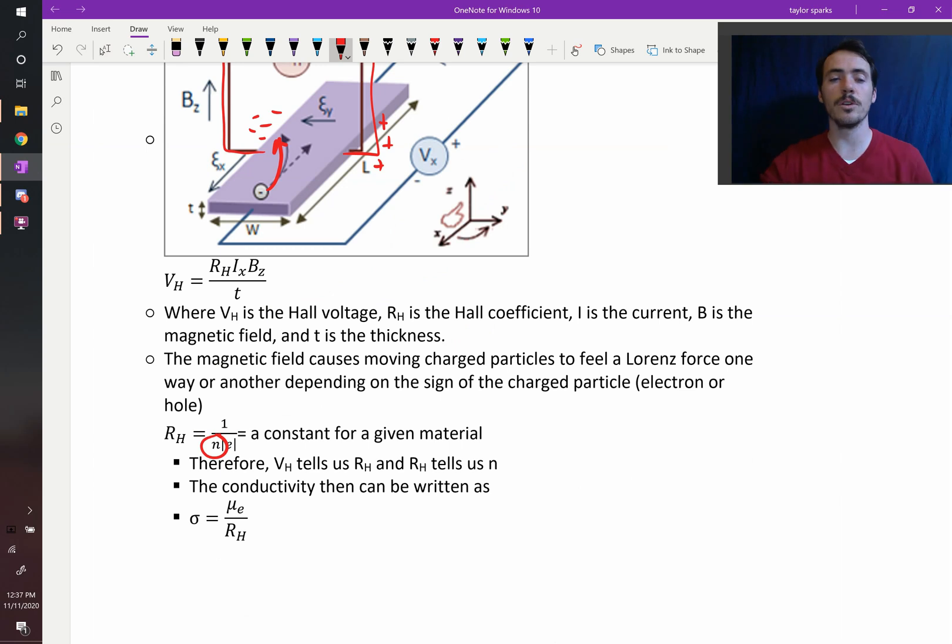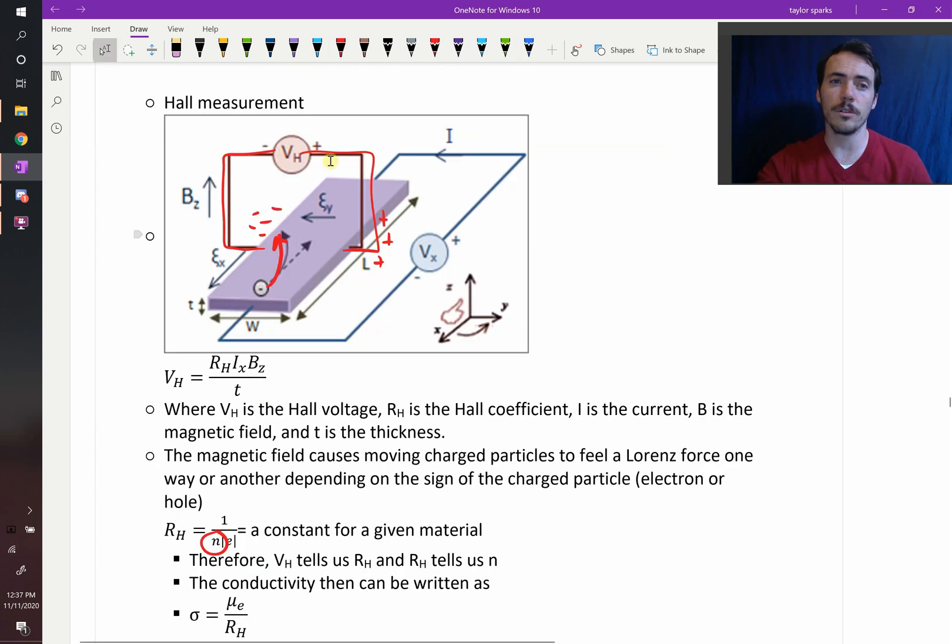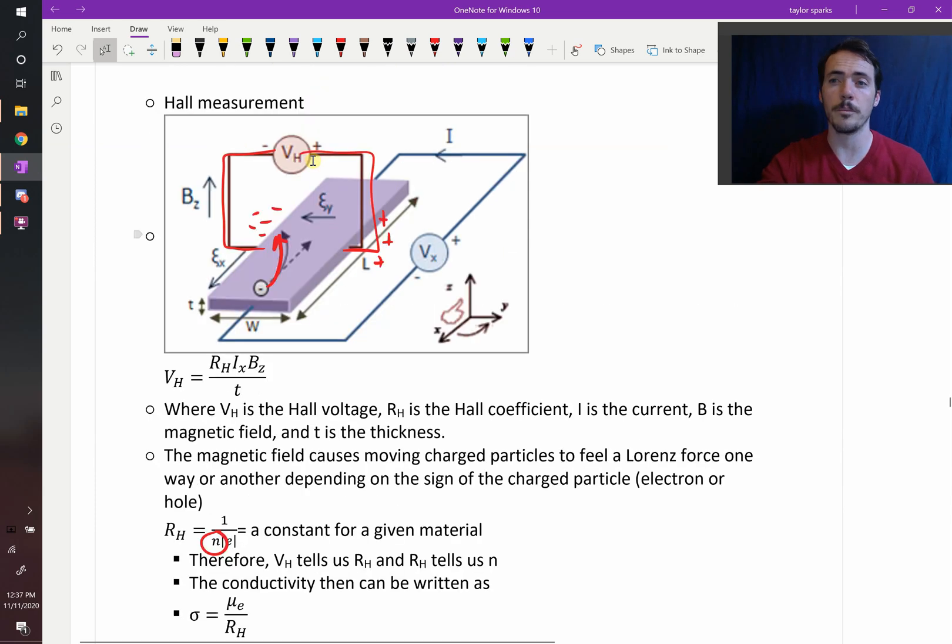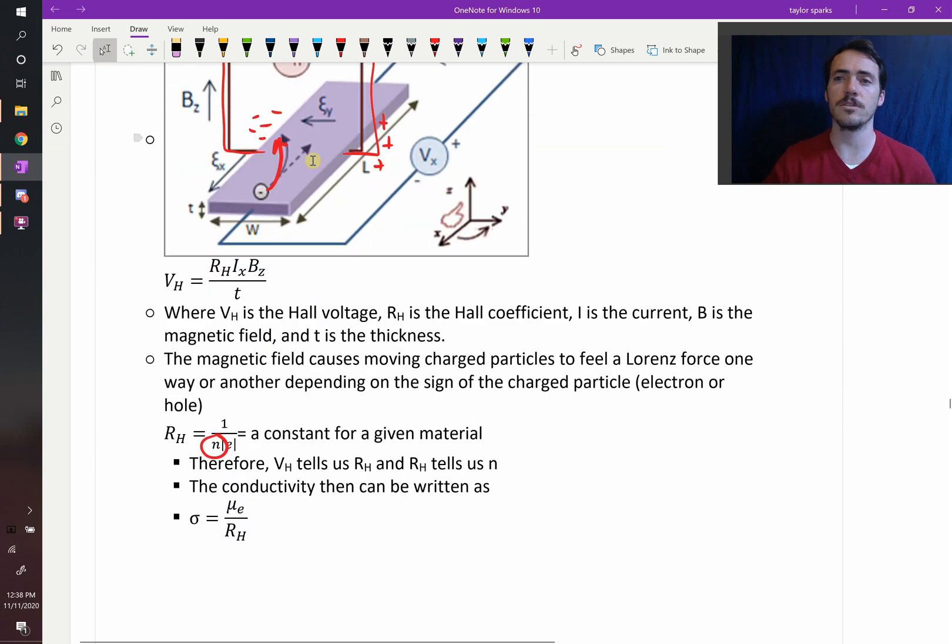And what's even cooler is the sign of your Hall voltage here, whether it's negative or positive, depending on which one it is, that will tell us whether your carriers in your material were primarily holes or primarily electrons. And so this is how you know whether your material is N-type or P-type and what your carrier concentration is.